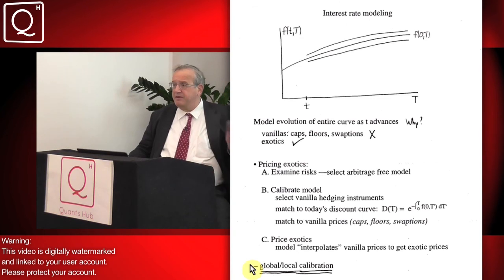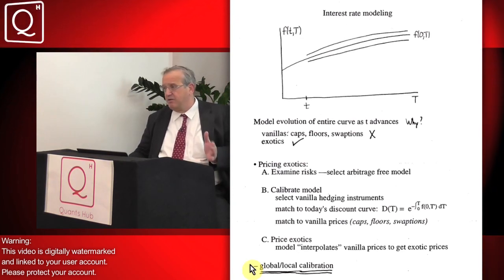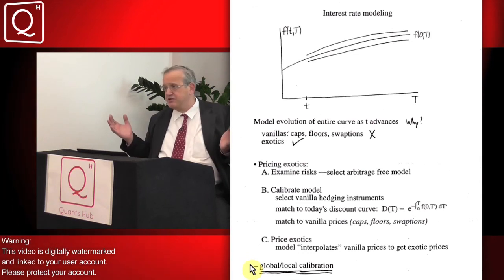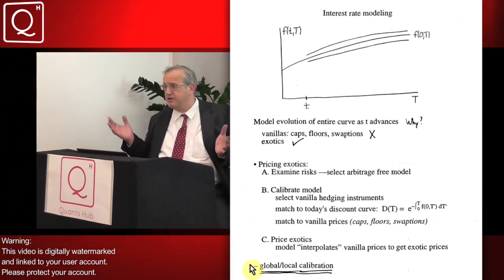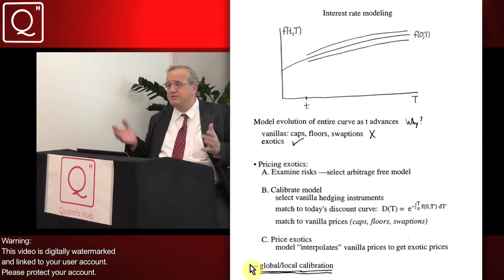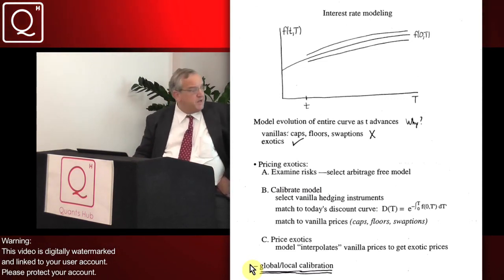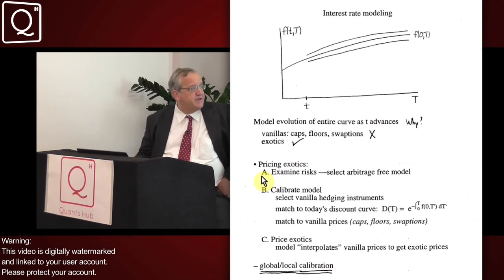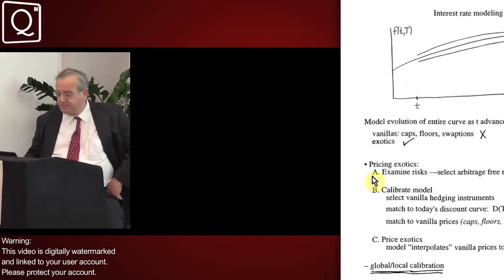Right now it's all very vague, but in the second talk, that's exactly what we'll do. We'll take an exotic, say what are the natural instruments to use for calibration, calibrate those instruments, and price. So the first step in this is examine the risks, just in some rough qualitative manner, just say what are the risks that we have to handle in our pricing.